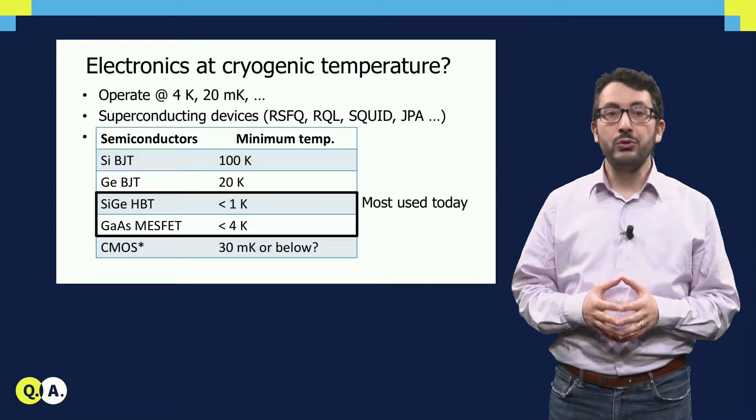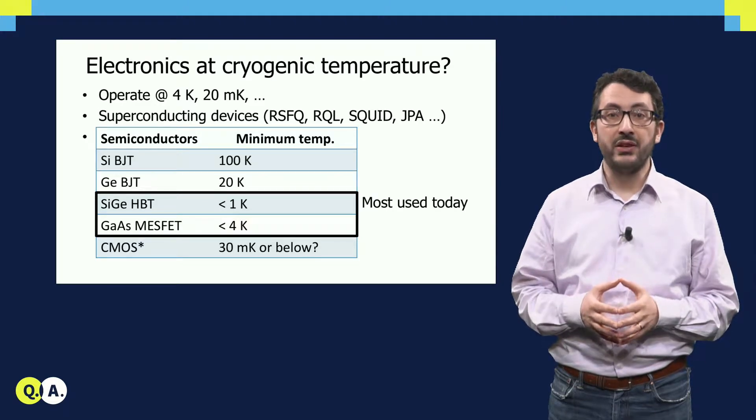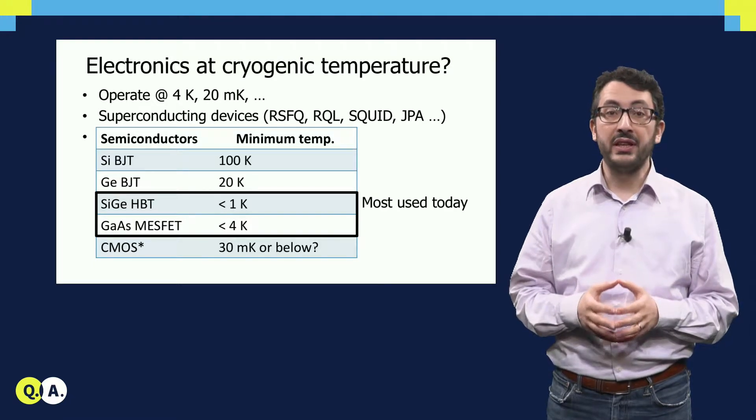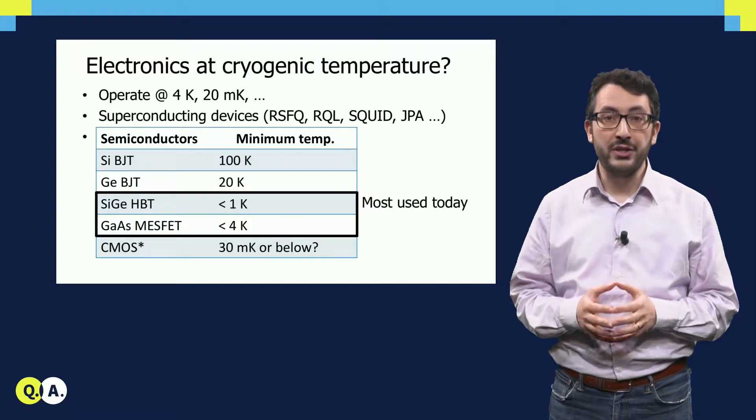Other technology really works at 4K or even below. For example, these two types of devices, silicon germanium HBTs or MOSFETs, are very much used today, also for quantum applications, because they operate at 4K or below and can operate with very low power dissipation.